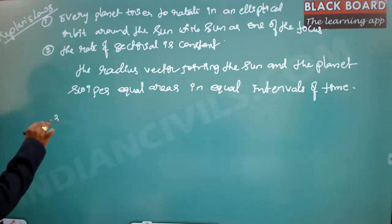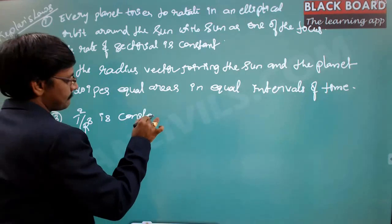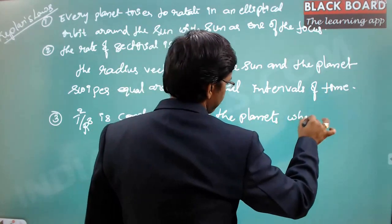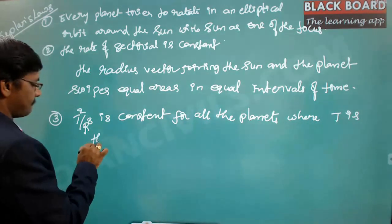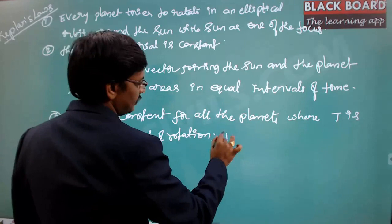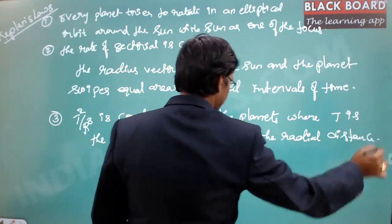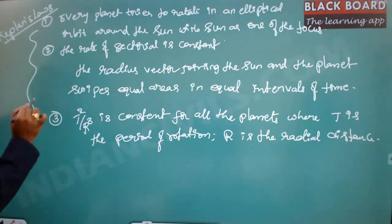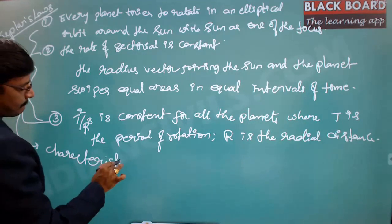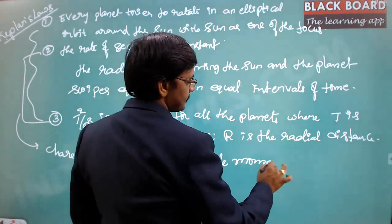The third law is: T² / R³ is constant for all the planets, where T is the period of rotation and R is the radial distance.